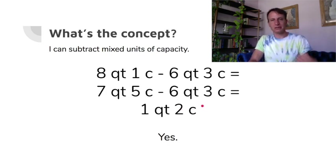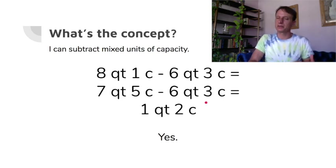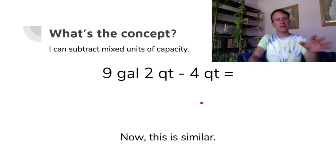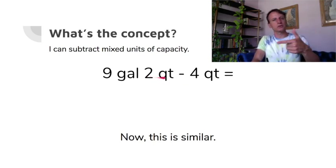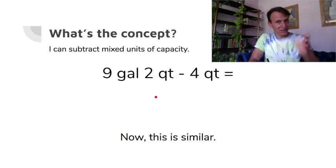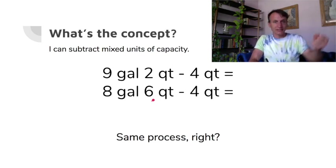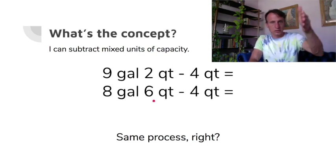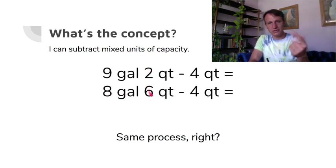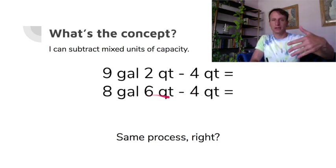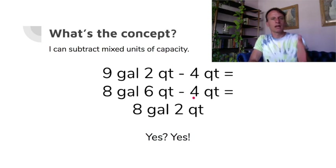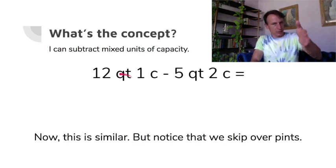Just slow down, take your time, and work through these — they will get easier with practice. Nine gallons and two quarts minus four quarts: we need to regroup because we only have two quarts. Set aside eight gallons, pour the ninth gallon out as four quarts — with the two quarts already there, that's six quarts. Now subtract four quarts: eight gallons and two quarts.